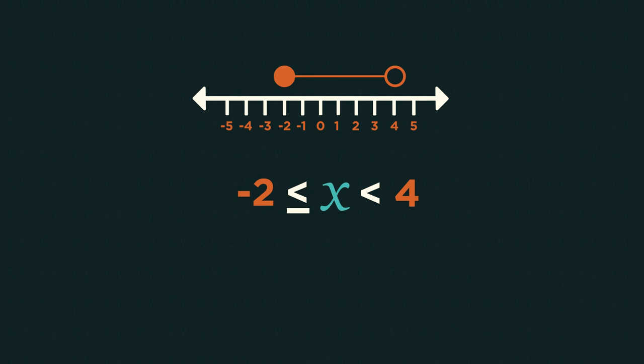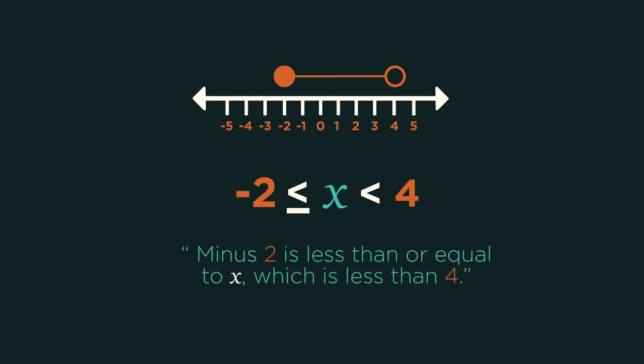Notice how we put x in the middle, so it appears just once. If we read this double inequality out loud, it says minus 2 is less than or equal to x, which is less than 4.